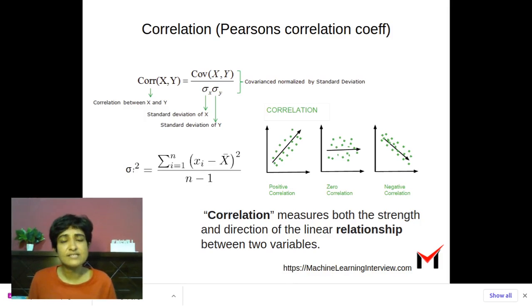The reason why it's often easier to interpret the correlation and why we say that it tells us both the strength and direction of the linear relationship is because when you normalize the covariance by the standard deviations of X and Y, what we see is the value is bounded between minus one and one.